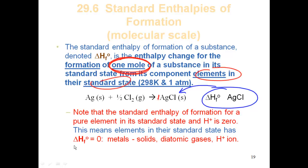I want you to know that the standard enthalpy of formation for pure elements — for example, iron solid or oxygen gas — those are your elemental states of those species. The delta HF of elements in their standard state is zero. So elemental states is zero. So if you go look in tables for the delta HF of different substances and you're talking about some elemental states, say you try to find oxygen gas in the table, you're not going to find it. That's because it's zero. Everything on delta HF is on a relative scale, relative to all the elemental states being called zero delta HF. So that is our reference point.